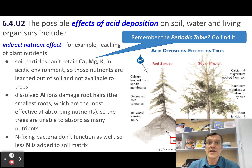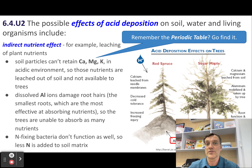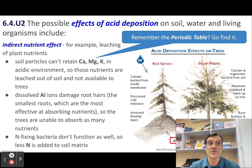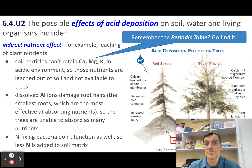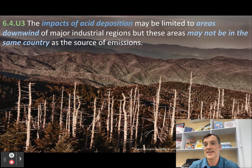There are also indirect nutrient effects, in which acid deposition indirectly affects the growth and survival of plants by leaching away essential nutrients from the soil, such as calcium and magnesium. These nutrients are important for plant health and productivity, especially in acidic soils.